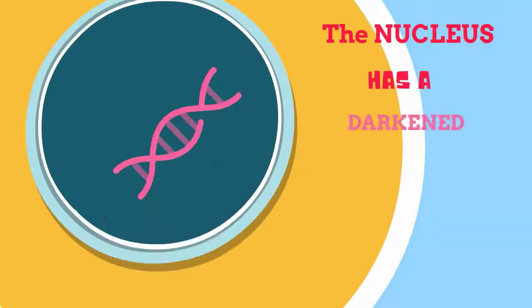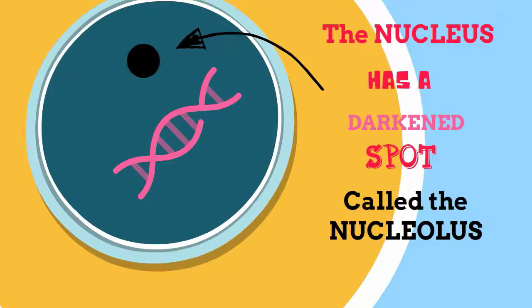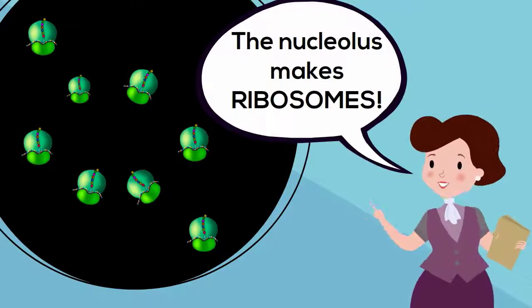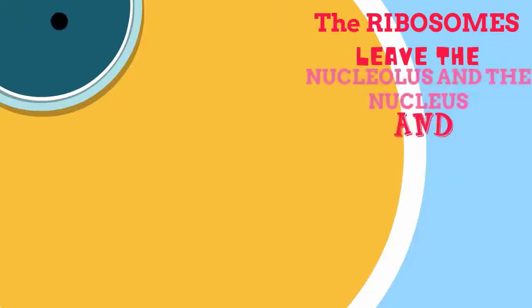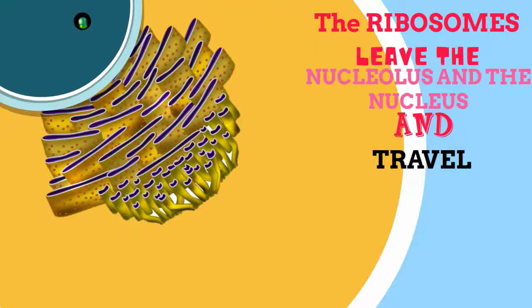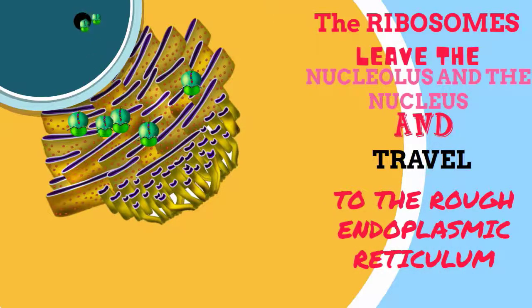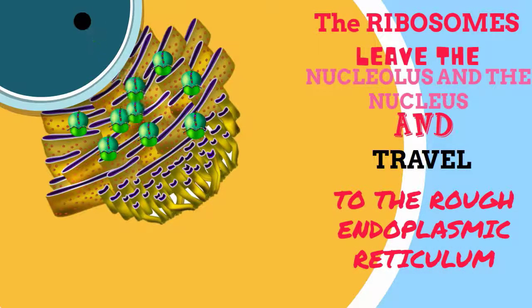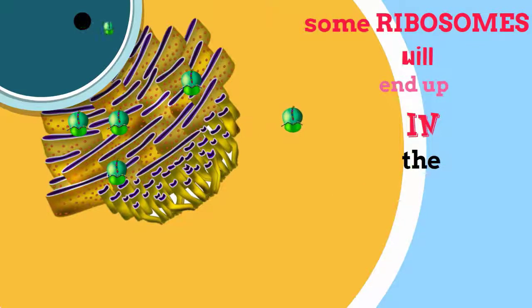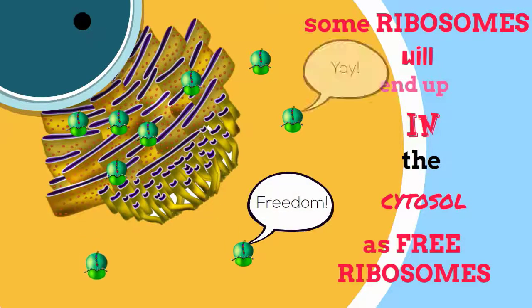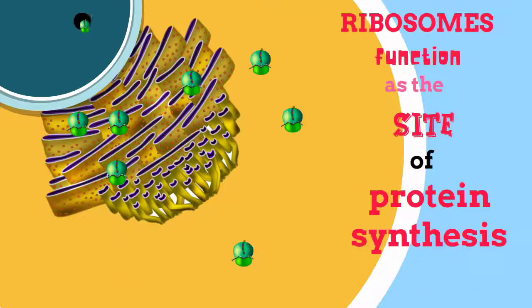The nucleus also has a darkened spot called the nucleolus. The nucleolus functions to make ribosomes. Ribosomes function as the site of protein synthesis. Once the ribosomes are made inside of the nucleus at the region of the nucleolus, they leave the nucleus and travel to the rough endoplasmic reticulum. Some ribosomes will end up in the cytosol. These ribosomes are called free ribosomes.